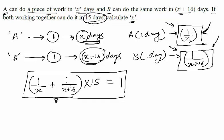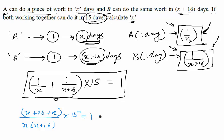Let us start and simplify this equation. Taking LCM, we get (x+16+x) / (x(x+16)) × 15 = 1, which implies 15 × (2x+16) = x × (x+16). If you further open the brackets, you would get a quadratic equation.